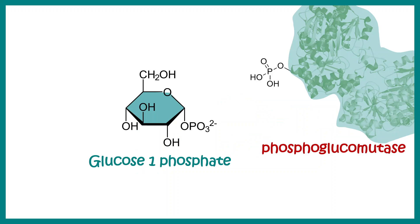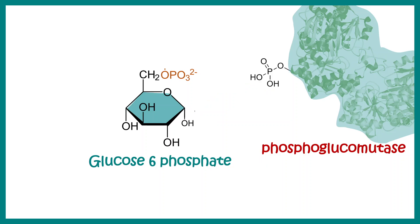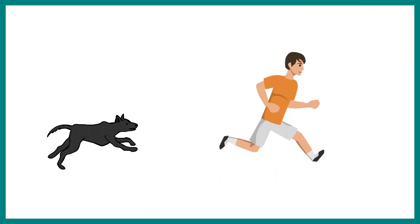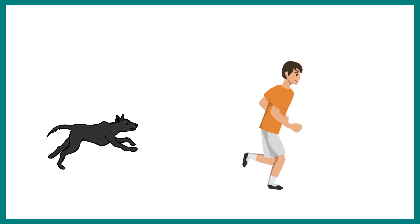Phosphoglucomutase then converts glucose-1-phosphate into glucose-6-phosphate. There is a nucleophilic attack leading to production of glucose-1,6-bisphosphate as a transient intermediate, and eventually glucose-6-phosphate is generated from glucose-1-phosphate. Once glucose-6-phosphate is generated it can be channeled into the glycolysis pathway.